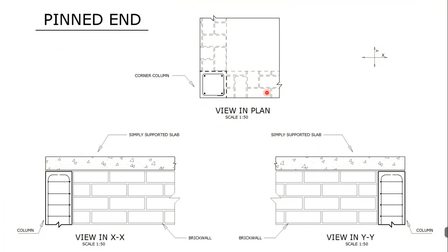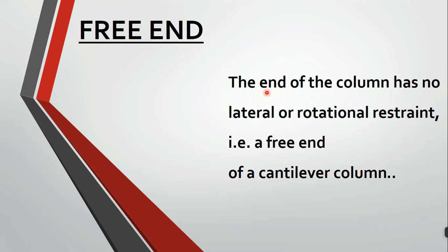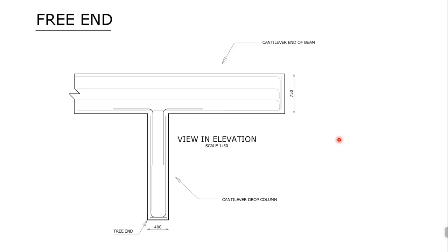The free end of a column is when that end has no lateral or rotational restraint — i.e., a free end of a cantilever column. You normally get these as dropped columns, which are usually architectural features provided by architects. As the engineer you would design this by incorporating the drop column as a load on the beam that will carry the cantilever column.